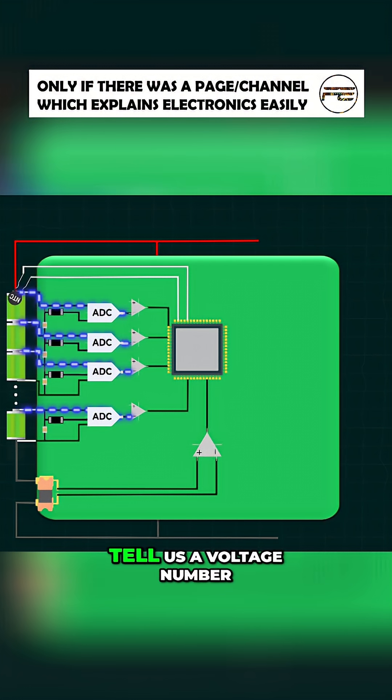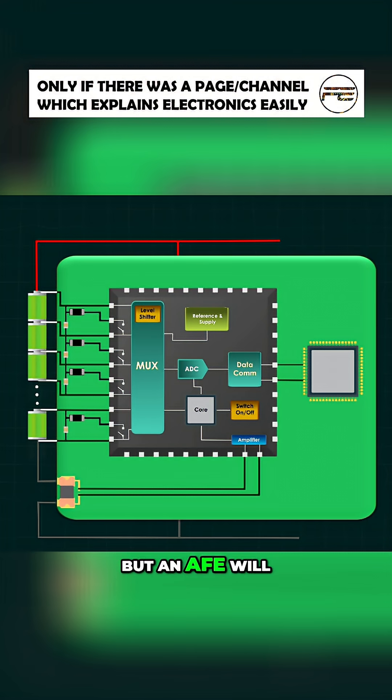Another way to say it: a plain ADC will tell us a voltage number, and a comparator will tell us over-threshold or not. But an AFE will manage the whole measurement process.